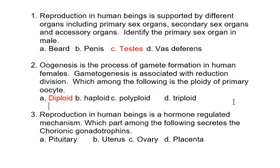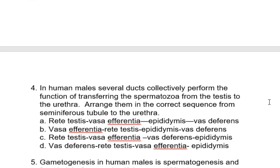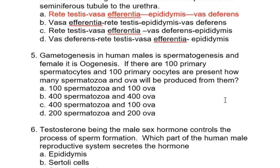Reproduction in human beings is a hormone-regulated mechanism. Which part secretes chorionic gonadotropins? Chorionic gonadotropins are produced by the placenta. In human males, several ducts collectively perform the function of transferring spermatozoa from the testes to the urethra. Arrange them in the correct sequence: rete testes, vasa efferentia, epididymis, and vas deferens.